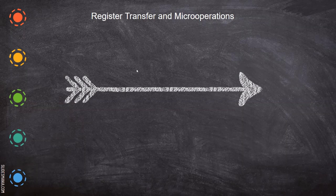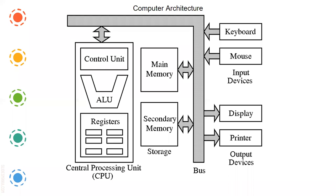In this video, we are going to see about the Register Transfer Language and micro operations — the set of instructions which helps in doing the micro operations. First, before going through that, we'll have an understanding about the computer architecture. The computer architecture will consist of control units, memory units, input, and output units.